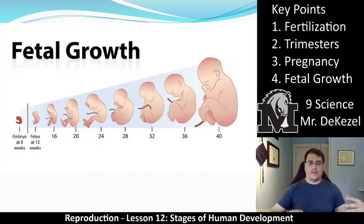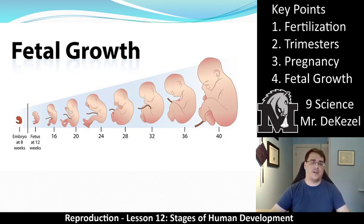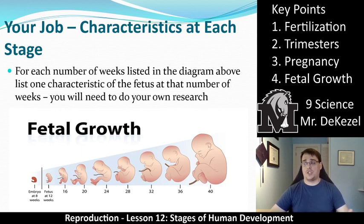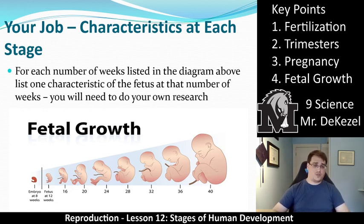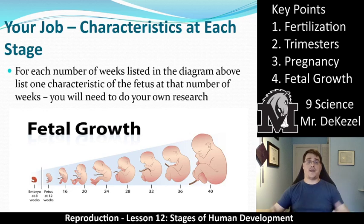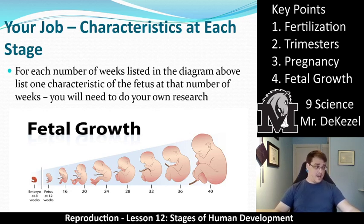Here we have a picture — likely in your notes as well — showing how a baby develops. It starts off as an embryo, somewhat unrecognizable, quickly becomes recognizable, and grows rapidly near the end. Your assignment is to find at least one characteristic at each stage: 8, 12, 16, 20, 24, 28, 32, 36, and 40 weeks. For example, fingernails start to grow, eyelashes appear, hair begins to grow. Find a landmark or cool fact for each week — there is space in your notes to do this, and you may need to do a little of your own research.